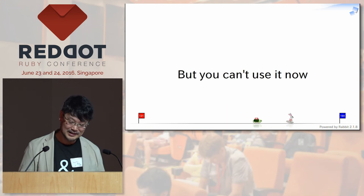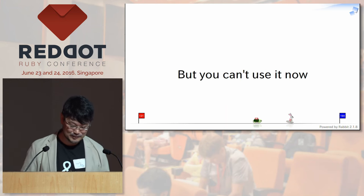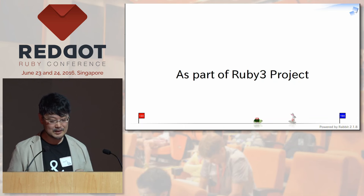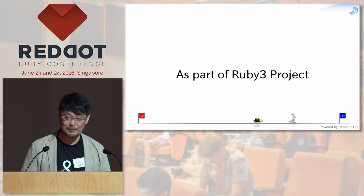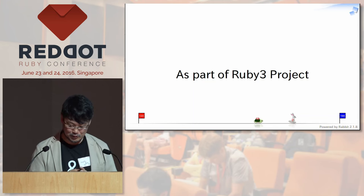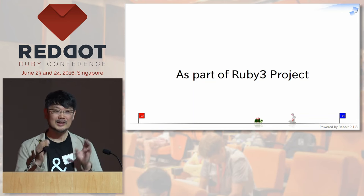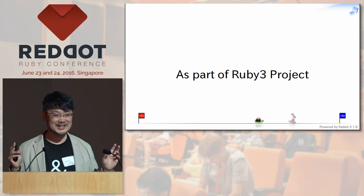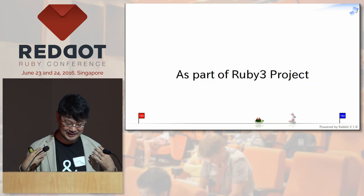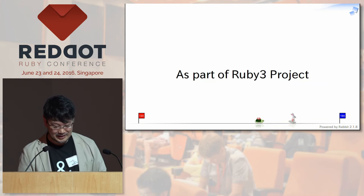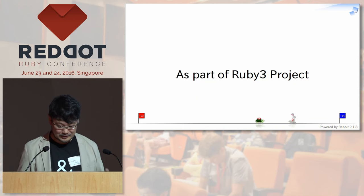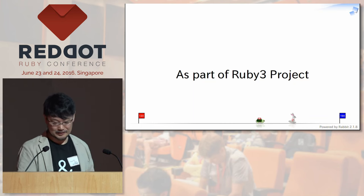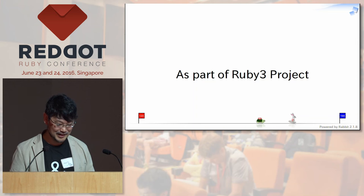Unfortunately, this is a mere concept still, but it is part of the Ruby 3 project. We have a lot of things to do for Ruby 3, but this kind of soft typing — a static typing kind of system where you can check duck typing type errors at compile time without any execution — that is my hope and dream. You will have soft typing in Ruby 3.